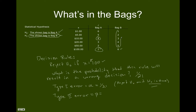Any of the $1, $5, $10, $20, or $50 bills in bag B could trigger a Type 2 error. Therefore, the chance of a Type 2 error would be 15 out of 21, which equals 5 sevenths. So the chance of a Type 2 error here would be 5/7. Type 2 error happens when we fail to reject H0 and H0 is false.